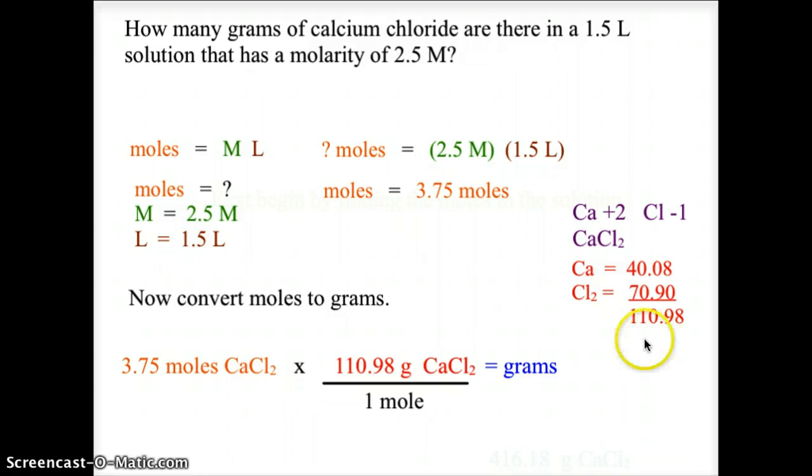Taking 3.75 moles of calcium chloride times 110.98 grams per mole, the moles cancel, and we get a final value of 416.18 grams of calcium chloride.